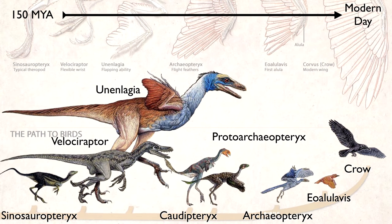What else? It skips around. This was called the Path to Birds. So you start with a dinosaur, you end up with a bird. This is supposed to be the path to birds. What's the oldest one? 150 million years.